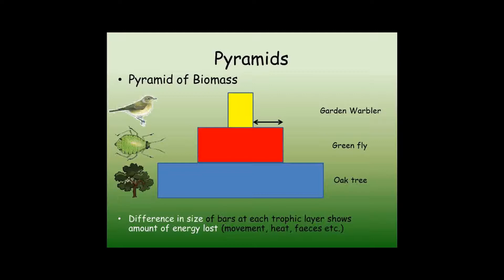Each level, known as a trophic layer, shows the total amount of living material. The difference in size of each bar as you move up the pyramid shows the amount of energy lost to less useful forms through keeping warm, movement, and so on.